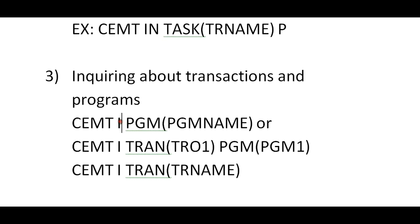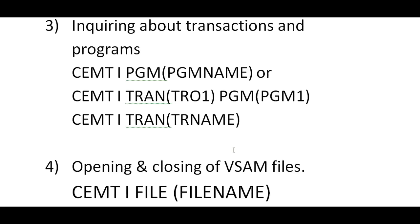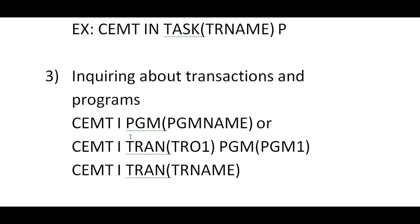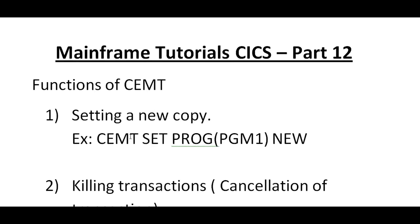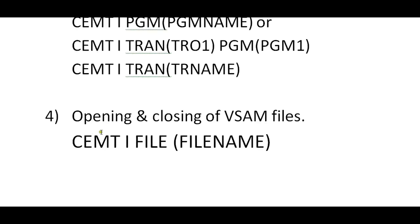We can also enquire about transactions and programs. You can use CEMT I PROGRAM program-name to identify a program, or CEMT I TRANSACTION transaction-name to identify a transaction. This enquiry method of identifying programs and transactions is the third functionality of CEMT.